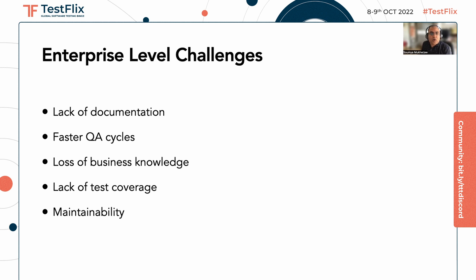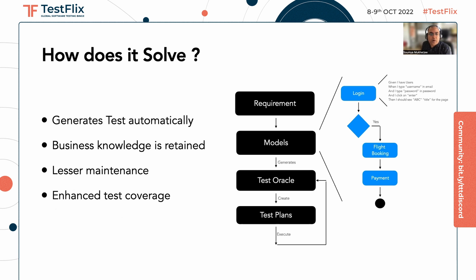How does model-based testing solve all of these problems? One, it helps you generate tests automatically. If you understand the model and have created it with the underlying statements, it will help you create those tests. Second, it will help you retain the business knowledge. Most SMEs — if there is attrition — it is very difficult to retain that business knowledge. You can at least have the process models in place so that the business knowledge can be retained.